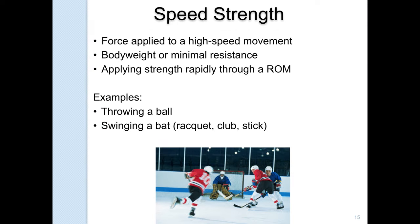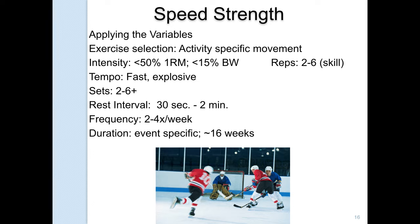Speed strength is force applied to a high-speed movement — body weight or minimal resistance — applying force rapidly all the way through a range of motion. Examples include throwing a ball, swinging a bat, racket, or club, and stick sports. You're trying to develop as much force as possible for a high-speed movement. For variables, when working at high speed, stay lighter — about 15% of body weight for medicine balls. If you're 200 pounds, don't use a medicine ball heavier than 30 pounds; realistically, use 10 or 12 pounds to develop explosive strength. Rep ranges are relatively low — this is a skill exercise. You're developing the skill of rapid force production, so use lower rep ranges and longer recovery periods so that, like a hockey player, you can move that stick as fast as possible when the time comes.